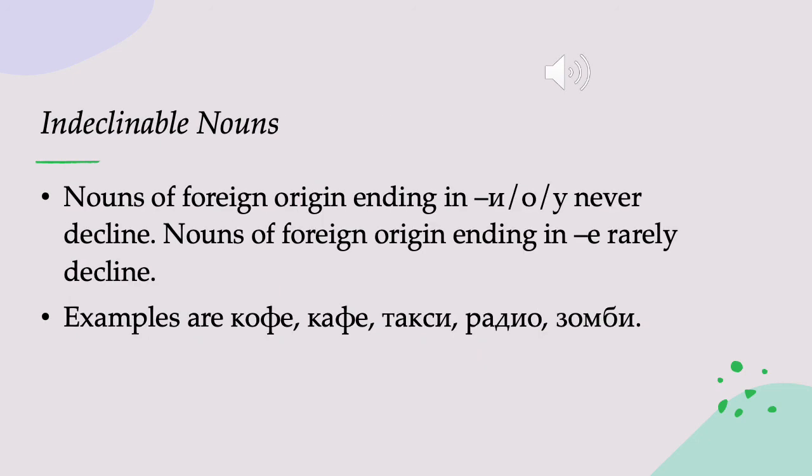Finally, we have indeclinable nouns. All Russian nouns of Russian origin will decline, but there are some nouns of foreign origin that don't decline. These include all nouns of foreign origin ending in Е, О, or У, and most nouns of foreign origin ending in ИЯ. Examples include kofe, coffee; taksi, taxi; radio, radio; zombi, zombie.